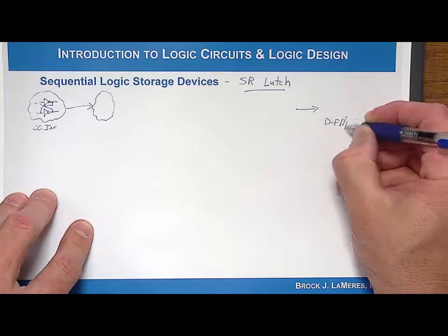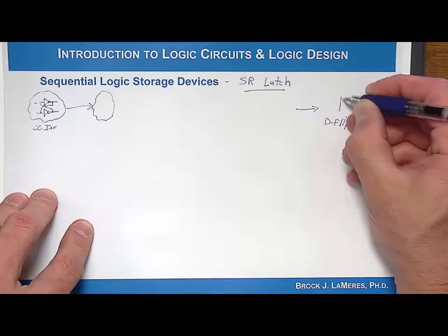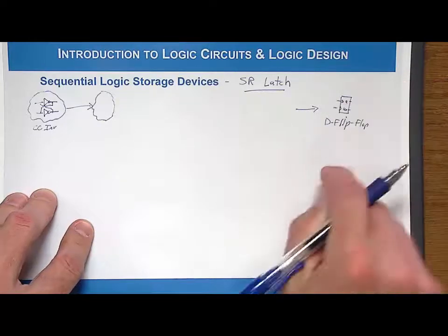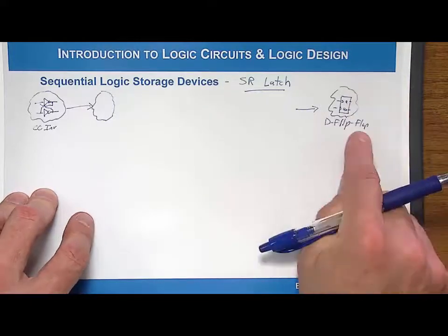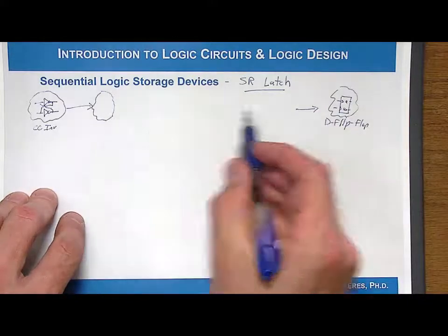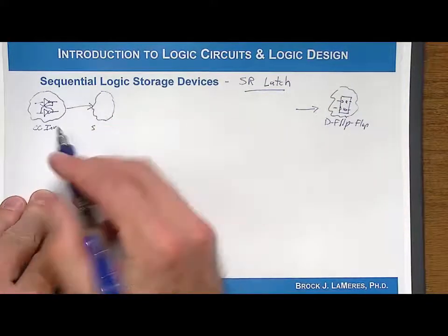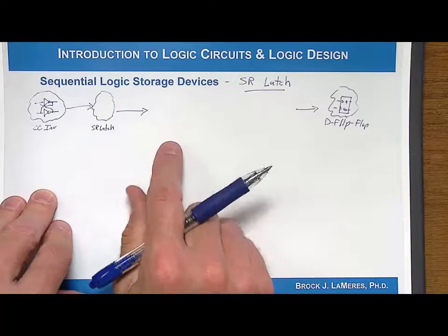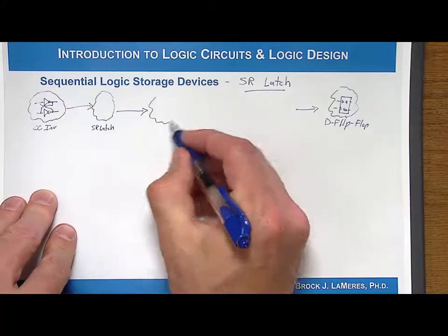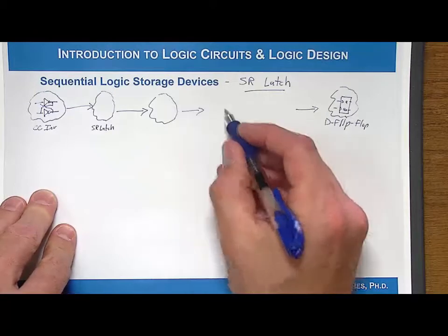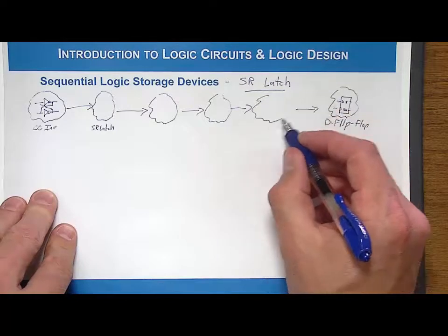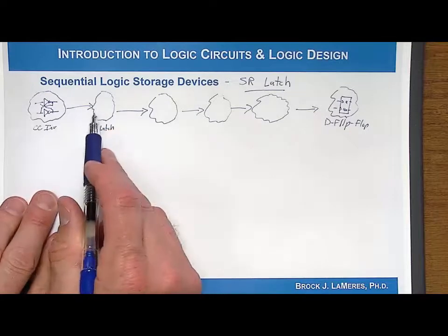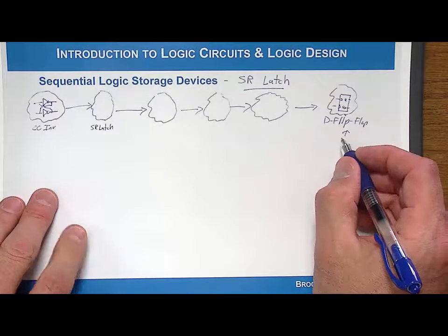The D flip-flop is what is in use today — it's what all digital systems use. To understand how you build a D flip-flop, you have to walk through all the different steps. The first step is to take a cross-coupled inverter and modify it to become an SR latch, then modify that to be an SR-bar latch, then an SR latch with enable, then a D latch, and finally the D flip-flop — the primary storage device used.